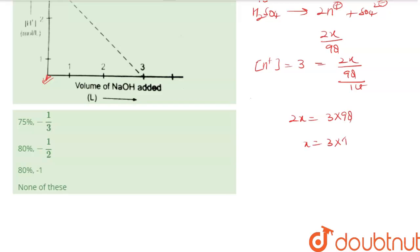So x is equals to twice of 49. So x is 3 into 49. So this is 147 gram.